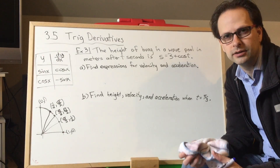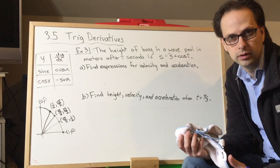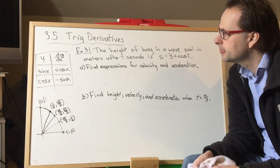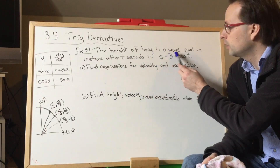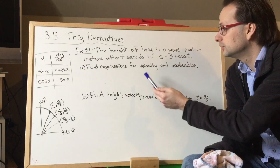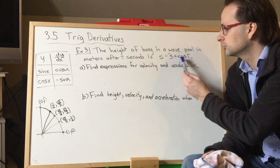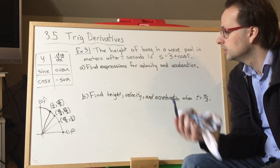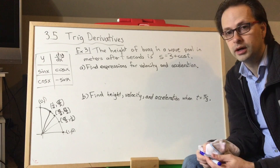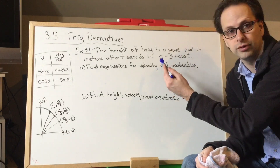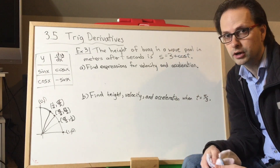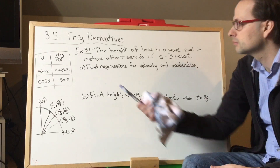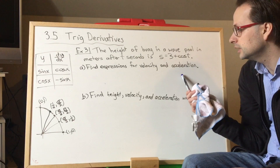Here's an example that connects kinematics — the mathematics of motion — with some trigonometry. The height of a buoy in a wave pool is given by S equals 3 plus cos t, where S is position in meters and t is in seconds. It's a bit annoying that this is not H for height, but S is the standard variable for a position function. Find expressions for velocity and acceleration.